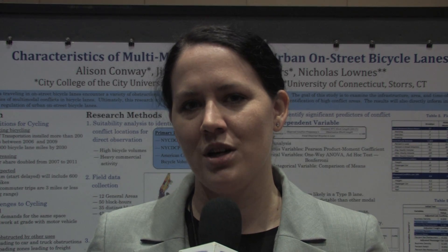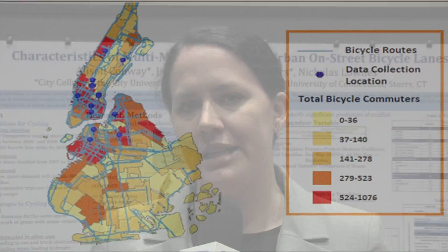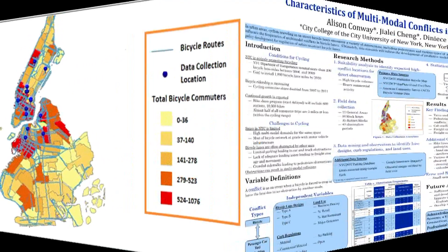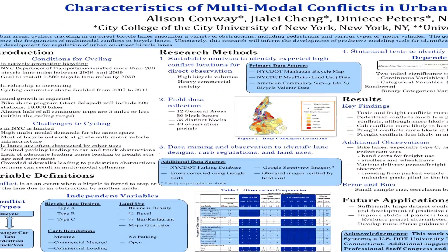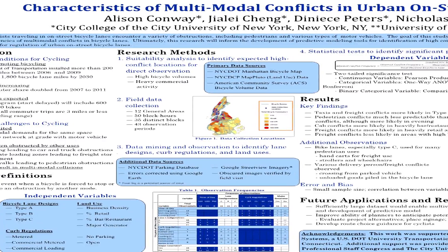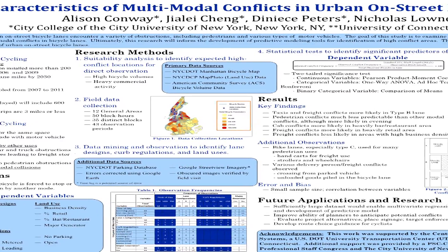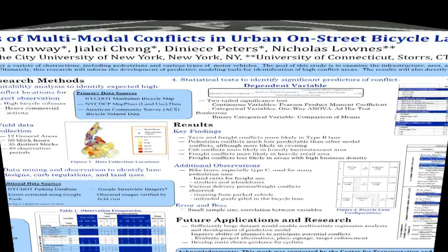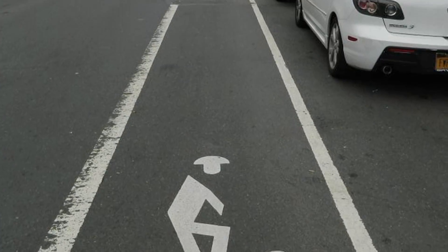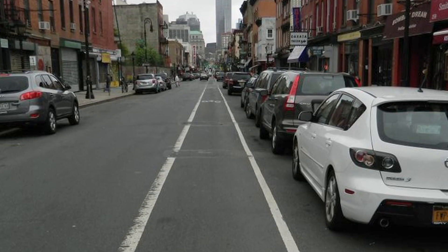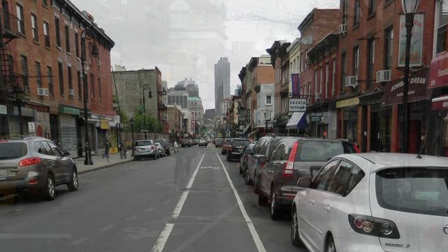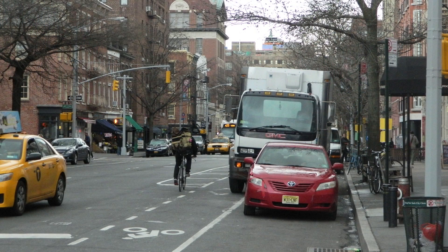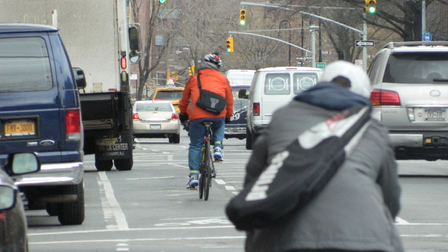This project used many sources of data. First, we started out using existing data sets: the New York City Bicycle Map, the New York City Department of City Planning's PLUTO data — which is land use data — and American Community Survey data, to identify where we expect a lot of traffic across all modes and particularly bicycles. We overlaid those using a GIS suitability analysis, which helped us identify specific locations in the city where we expected a lot of conflict.